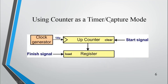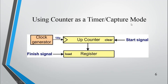There is another mode of operation known as capture mode. This is similar to a stopwatch. When you give a start signal, the counter keeps on incrementing. When you give a finish signal, whatever value is currently present in the counter is taken to a register known as the capture register. You are able to capture the elapsed time or elapsed counter value. This mode is known as capture mode of operation. So the three basic modes of operation are counter mode, compare mode, and capture mode.